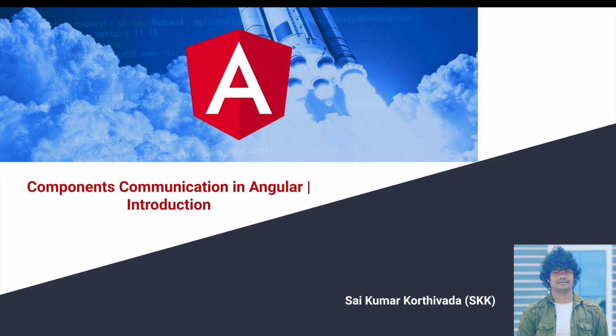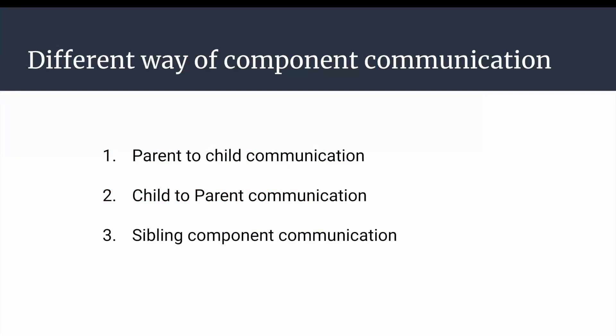Let me go into the different types of component communication roadmap. We'll talk about three different types: parent to child communication, child to parent communication, and sibling component communication.